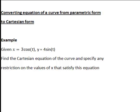When we say Cartesian form we're basically wanting to eliminate the parameter t to obtain a relation between X and Y.